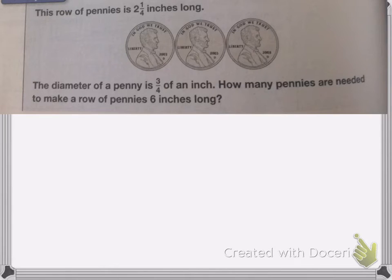So on this one, we're going to be working with dividing by fractions. So here we have this row of pennies. It's 2 and a quarter inches long. So the diameter of 1 penny is 3 fourths of an inch. And then I need to know how many pennies are needed to make a row of pennies 6 inches long.